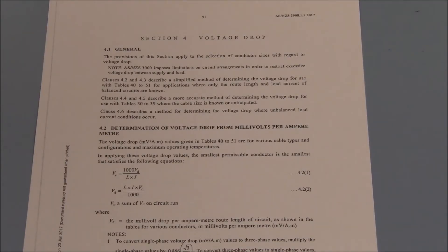Section 4 of AS3008 lists a number of methods relating to voltage drop. We will be concentrating on the millivolt per ampere metre method.